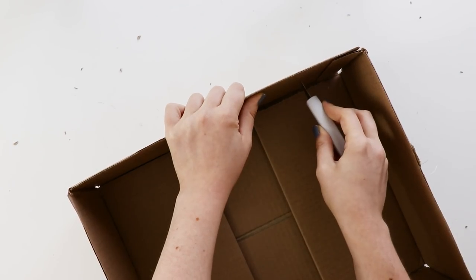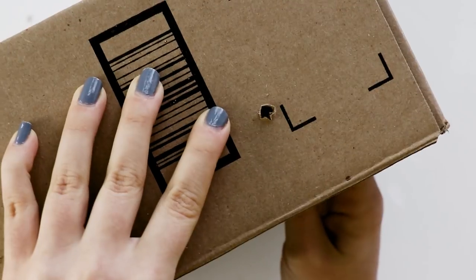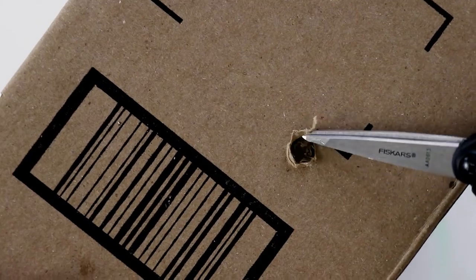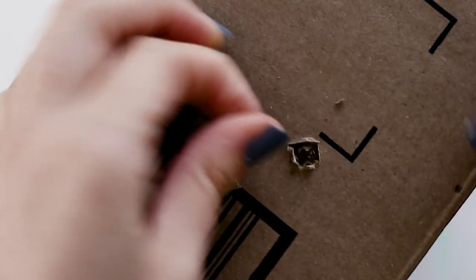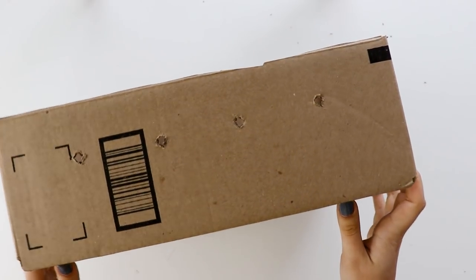Now use a craft knife to punch a little plus sign at each of those marks. Then stick a pencil through them to open them up and trim some of the extra cardboard. Don't worry if this looks a little messy right now, we'll be covering it up later.